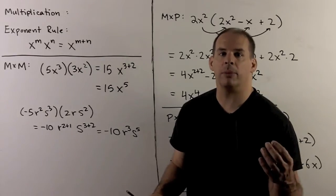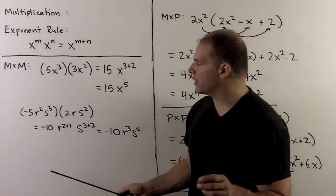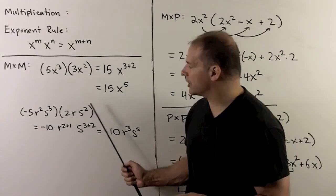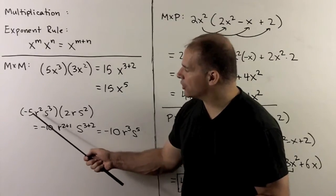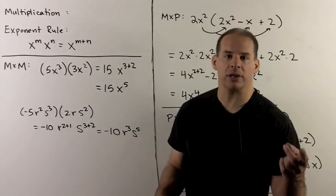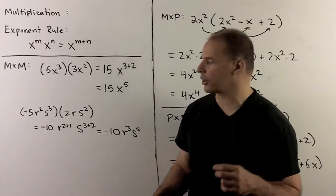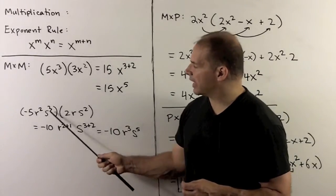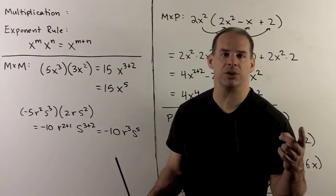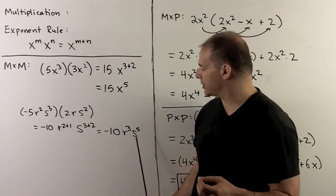If we have more than one variable, we just do a separate multiplication for each variable. For instance, if I have minus 5r squared x cubed times 2rs squared: first the numbers, minus 5 times 2 is minus 10. Then r squared times r — since r equals r to the 1 — gives r to the 2 plus 1, or r cubed. Then s cubed times s squared gives s to the 3 plus 2, or s to the 5th. So we get minus 10 r cubed s to the 5th.